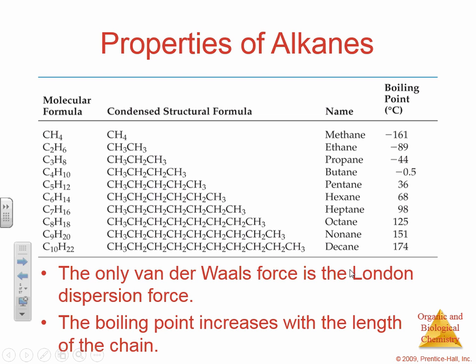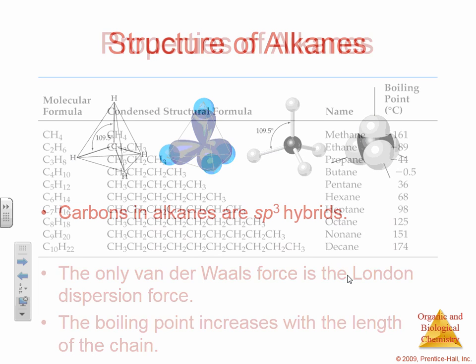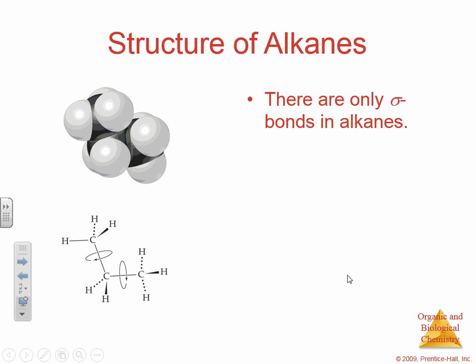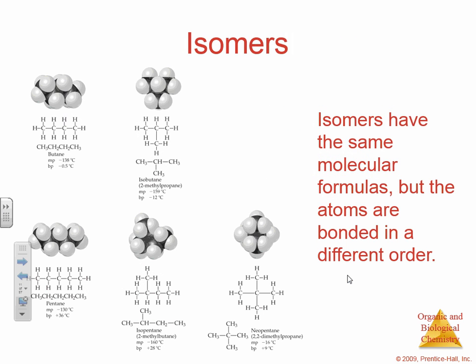Typically alkanes have sp3 orbitals and a sigma bond. And remember, isomers are the same molecular formula but bonded in a different order. Here we have pentane, isopentane, and neopentane — everything is bonded in a different order. We also have butane and isobutane. Based on butane or isobutane, the melting point and boiling points of the structure change slightly. So isomers, just like isotopes — same molecular formula, different bond order.